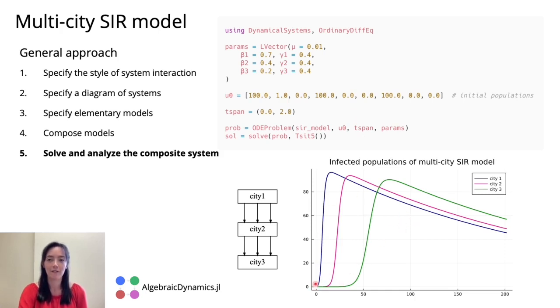We see that the infected population of city one peaks first, followed by peaks of the infected populations in cities two and three. And this reflects our diagram of systems where we had people flowing from city one to city two to city three.